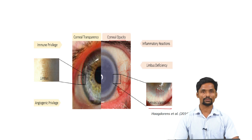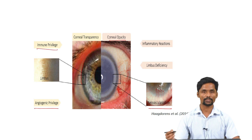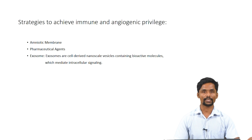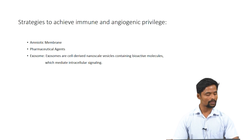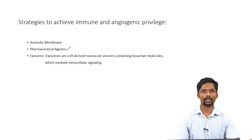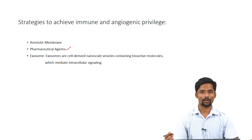As in any wound healing process, wound healing leads to scarring of the tissue that ultimately results in loss of vision. Many attempts have been made to preserve the angiogenic and immune privilege of the cornea. For example, amniotic membrane naturally contains anti-inflammatory and anti-angiogenic compounds, and using amniotic membrane for corneal wound healing lessens the inflammation stage. Many pharmaceutical agents that are anti-angiogenic or anti-inflammatory are also used to achieve immune and angiogenic privilege.